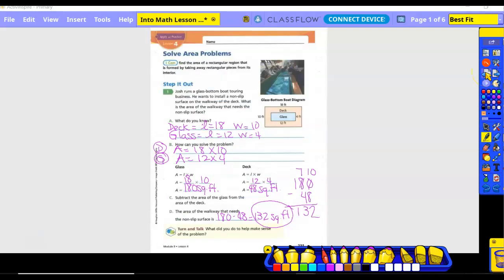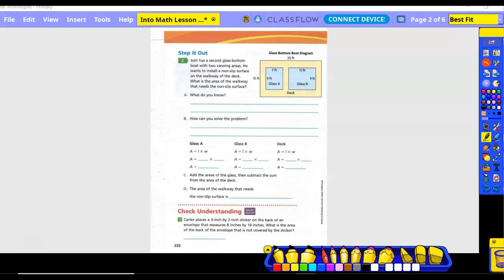On this other one, we accidentally wrote down the stuff, so just draw an arrow to say that those should be switched. Number two, Josh has a second glass bottom boat with two viewing areas. He wants to install a non-slip surface on the walkway of the deck. So the deck has a length of 25 and a width of 15. Glass A has a length of 9 and a width of 7. Glass B has a length of 11 and a width of 9.